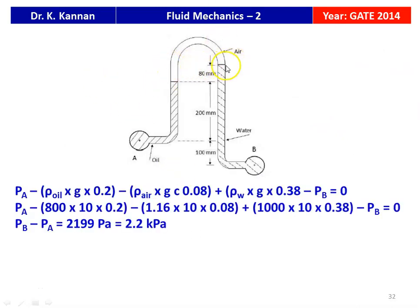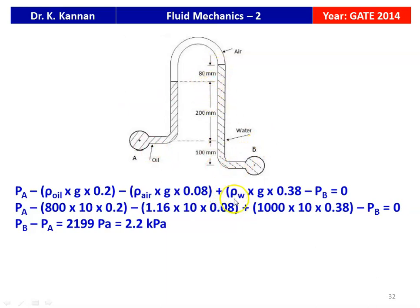This is the manometer and this is the reference point. Writing the manometric equation: P_A minus density of oil times g times 0.2 (200 mm) minus density of air times g times 0.08 (80 mm height of air column), plus density of water (rho_W) times g times 0.38 (that is 100 plus 200 plus 80 = 380 mm) minus P_B equals zero. Substituting values: 800 times 10 times 0.2, minus 1.16 times 10 times 0.08, minus 1000 times 10 times 0.38 gives P_B minus P_A equals 2199 Pascal, or 2.2 kilo Pascal.